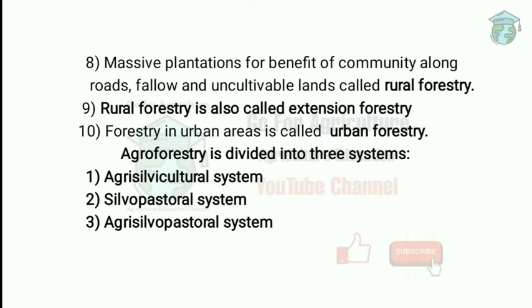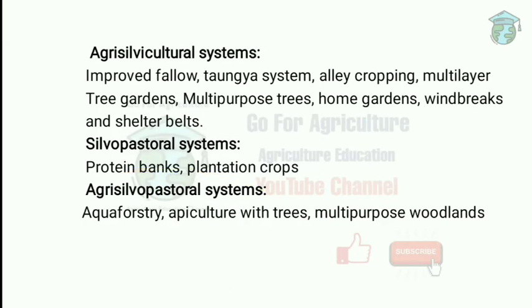The basic concept of agroforestry divides it into three systems: agrisilvicultural system, silvopastoral, and agrisilvopastoral. In the agrisilvicultural system, there is improved fallow and the taungya system, which is hill cultivation.